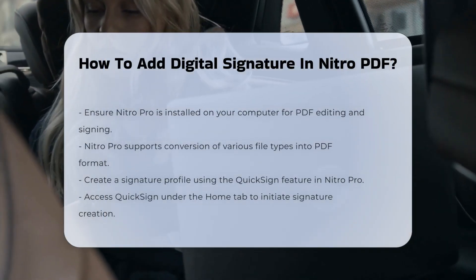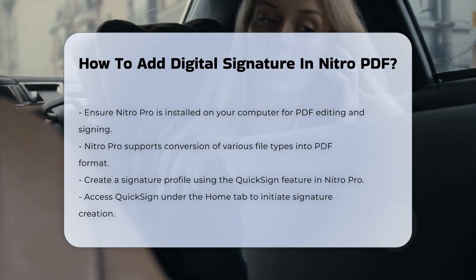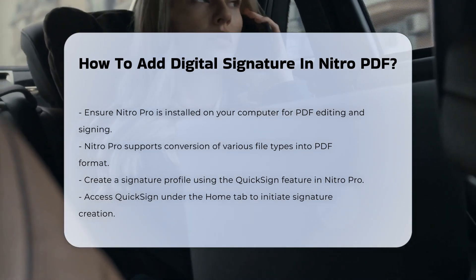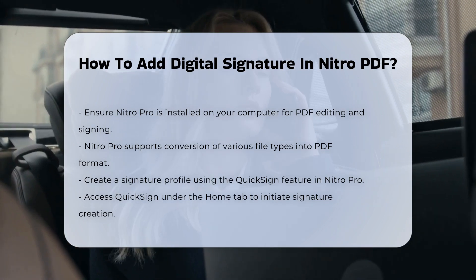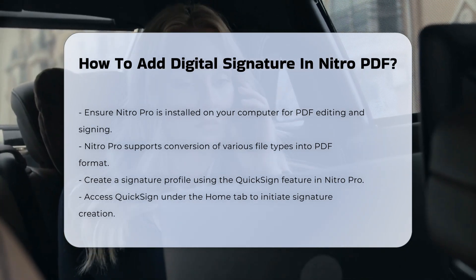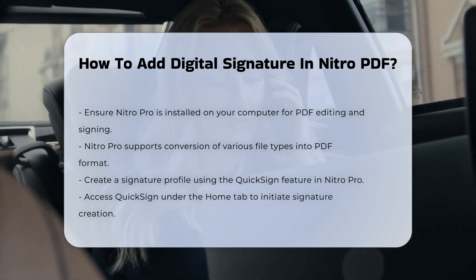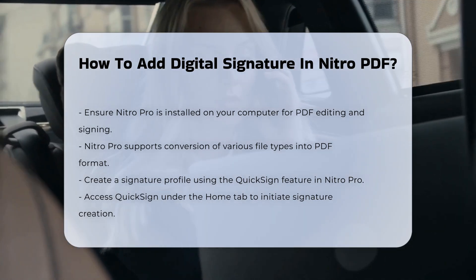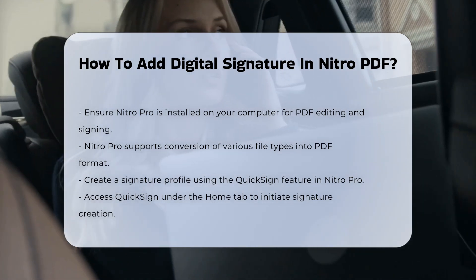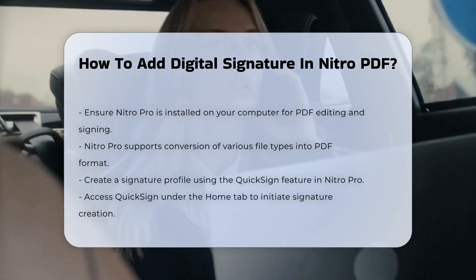To add a digital signature in Nitro PDF, you need to follow a series of steps that leverage the capabilities of Nitro Pro, a powerful PDF editing and signing tool. First, ensure you have Nitro Pro installed on your computer. This software allows you to convert various file types, including Word, Excel, PowerPoint, and Outlook documents into PDF format, which can then be signed digitally.